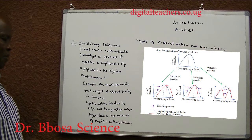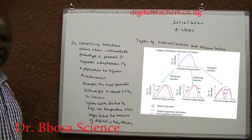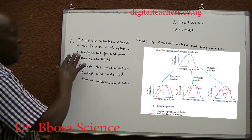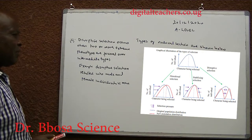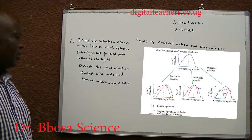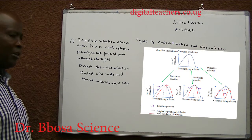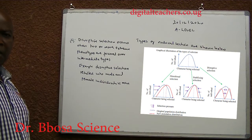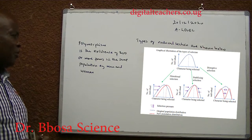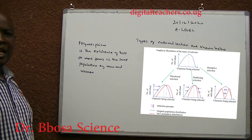Two, stabilizing selection occurs when intermediate phenotypes are favoured while bigger babies die because of difficulty in delivery. Three, disruptive selection occurs when two or more extreme phenotypes are favoured over intermediate types. For example, disruptive selection resulted in male and female individuals. Polymorphism is the existence of two or more forms in the same population, for example man and woman.